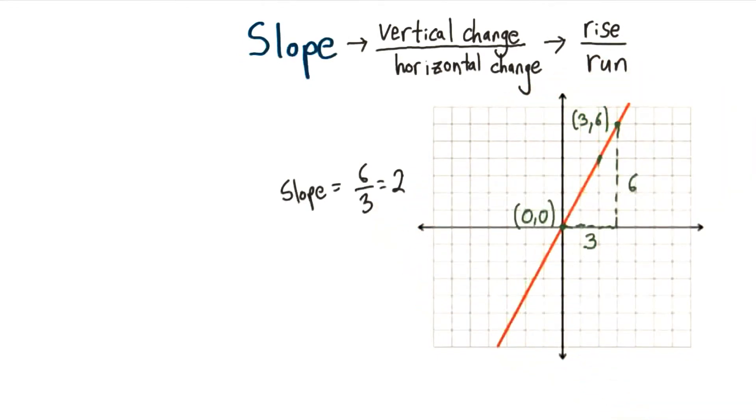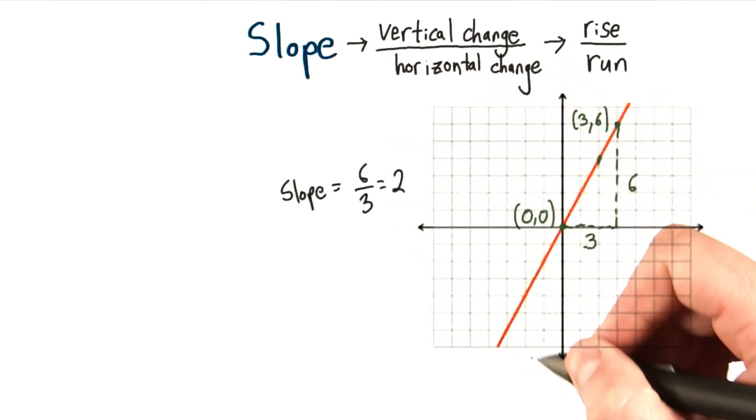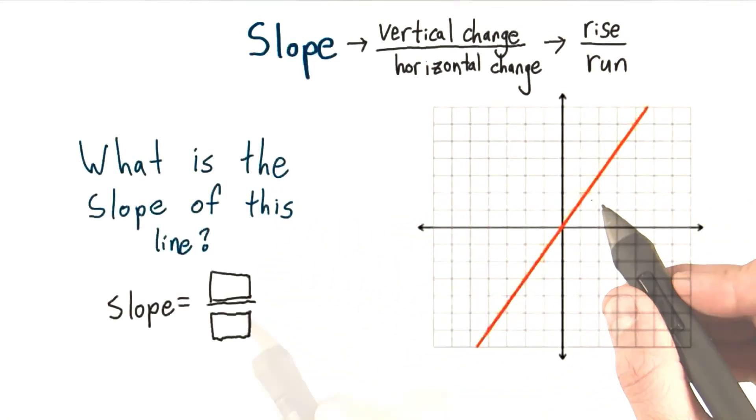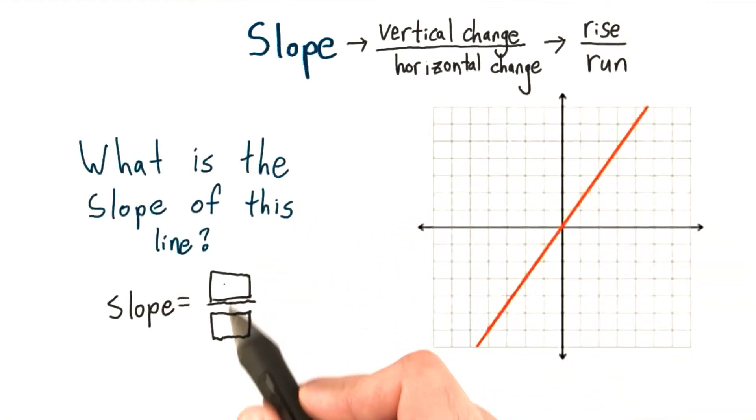So it doesn't matter which points you choose. A line's slope is a line's slope. So let's practice with a slightly different line. Let's look at this line. What is the slope of this line? You can enter your answer here as rise over run, but make sure it's fully simplified.